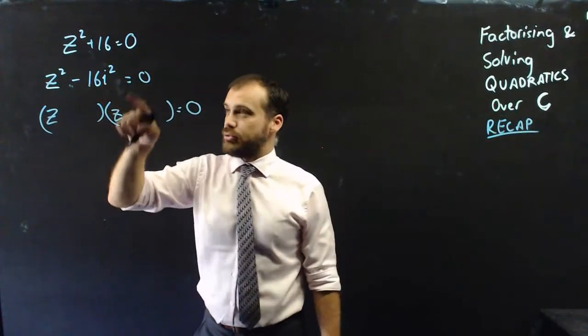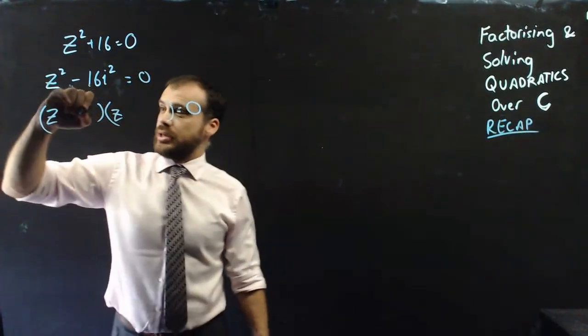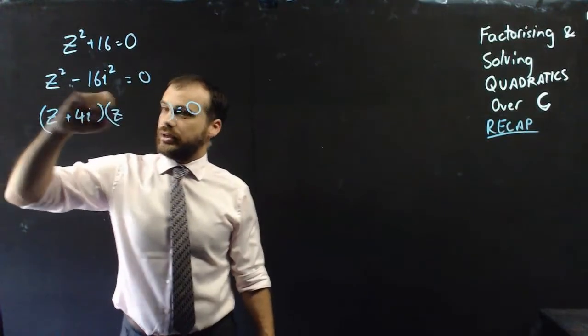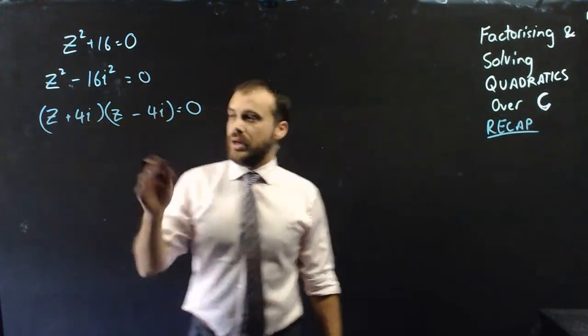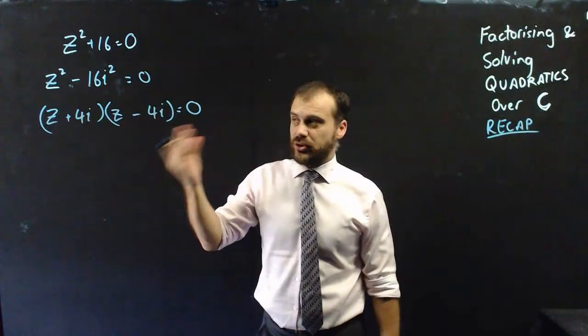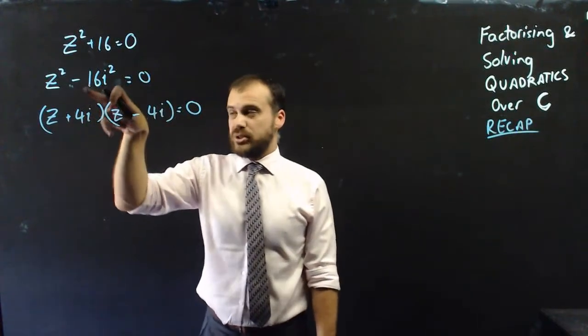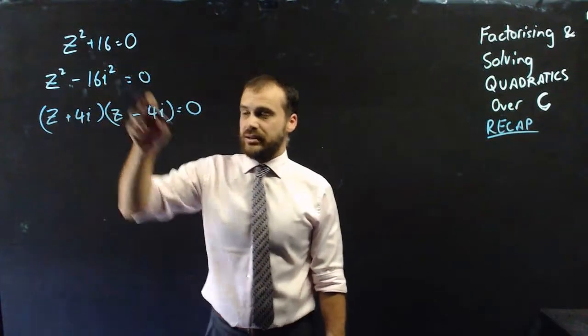Now, the square root of that would be 4i. And of course, you can expand it to check that you're correct. But if you expand it, you'll end up back here, which can then be simplified as that.